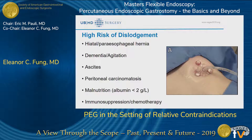In patients at high risk of dislodgement — those with hiatal hernias, dementia and agitation, poorly managed ascites where fluid volume varies, peritoneal carcinomatosis, or factors contributing to poor wound healing such as malnutrition, immunosuppression, or chemotherapy — I will add T-fasteners around the PEG in addition to the tube. This helps oppose more stomach area to create a larger tract, so that if the tube becomes dislodged, it can be replaced safely, decreasing the risk of peritonitis. An abdominal binder can also be placed to help prevent dislodgement.